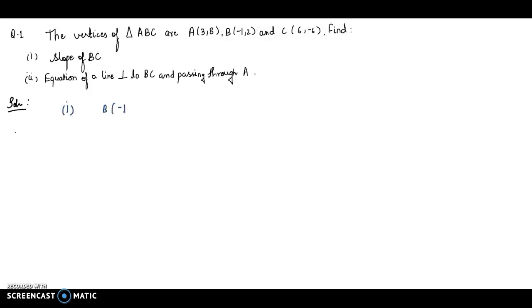B is (-1, 2) and C is (6, -6). So this will be x₁, y₁ and this will be x₂, y₂. The formula of slope, M is y₂ - y₁ divided by x₂ - x₁. We will be putting the values: -6 - 2 divided by 6 + 1, since 6 - (-1) is +1. The answer is -8/7.